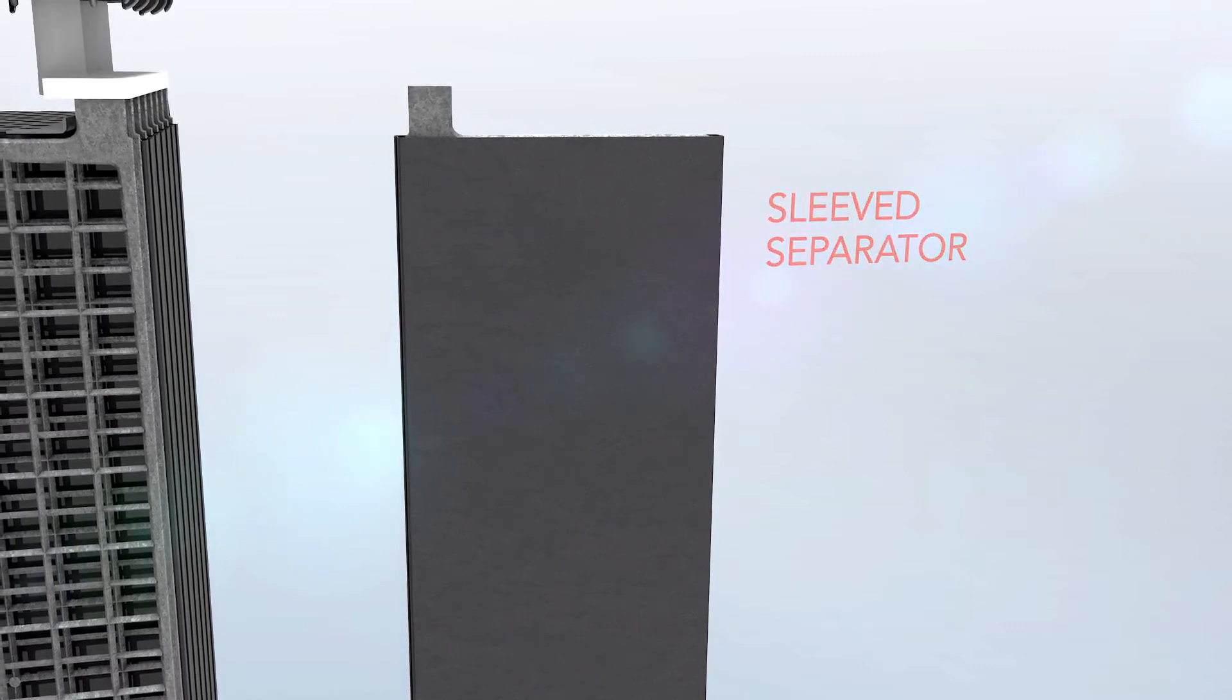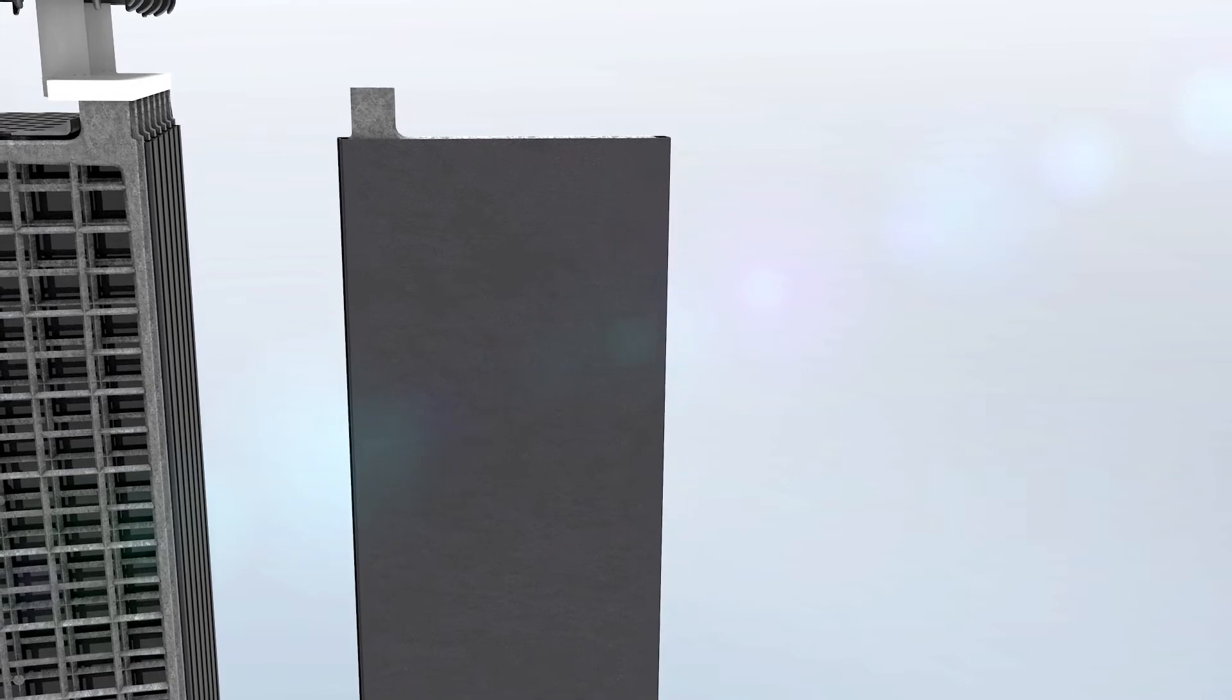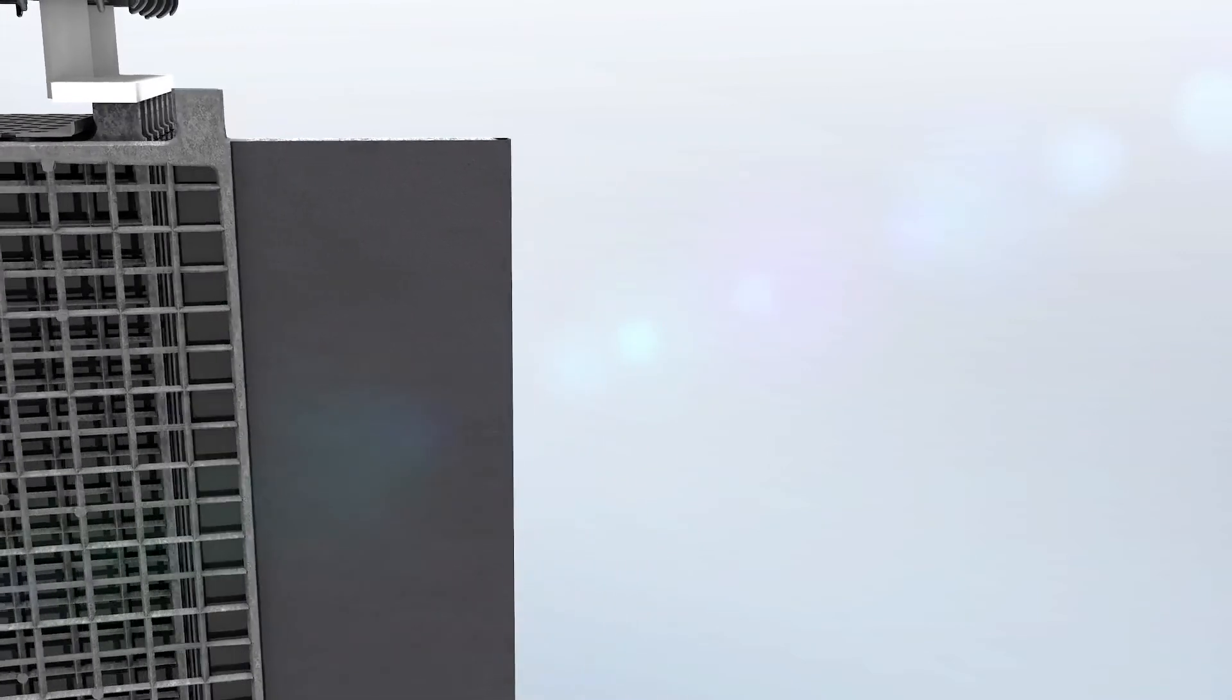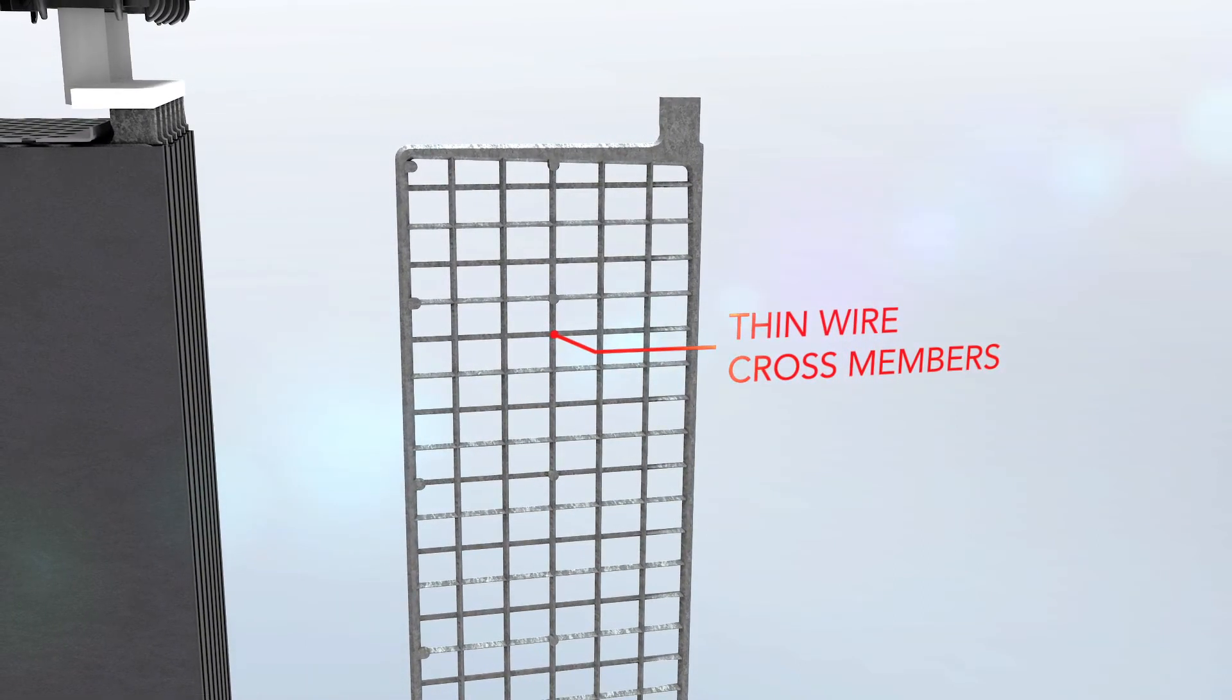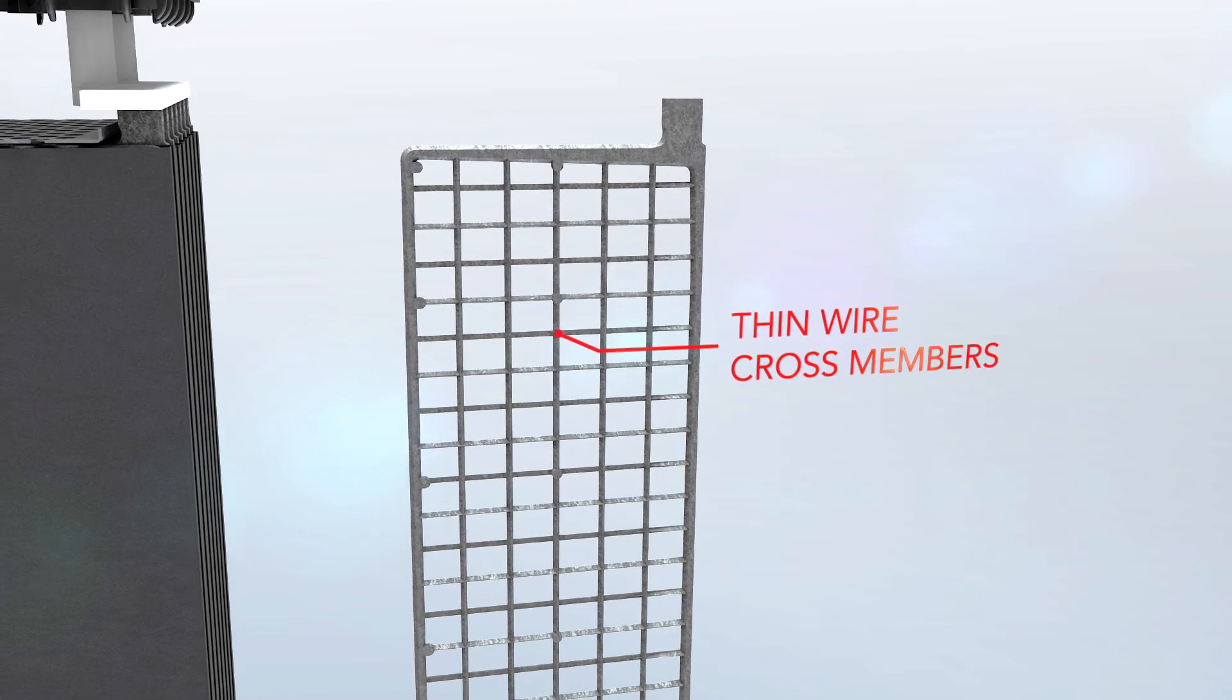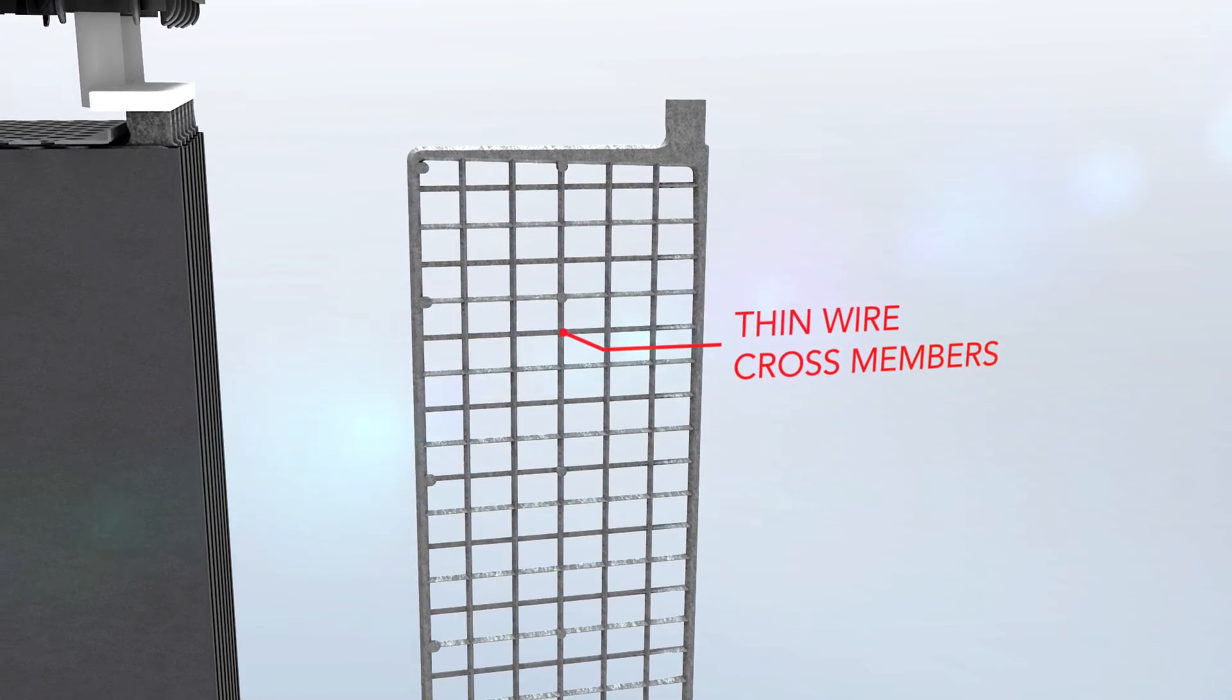The unique back rib design increases electrolyte flow and maximizes contact with the negative plate. The design of the negative grid exposes the maximum amount of active material and surface area to the electrolyte for increased capacity.